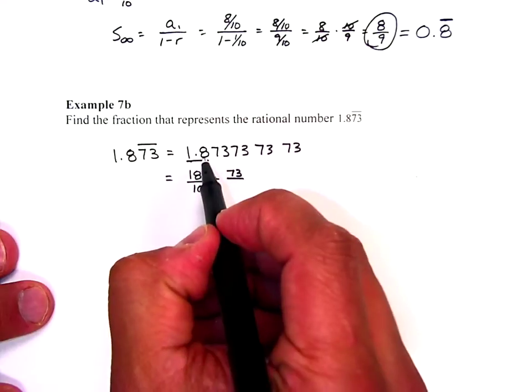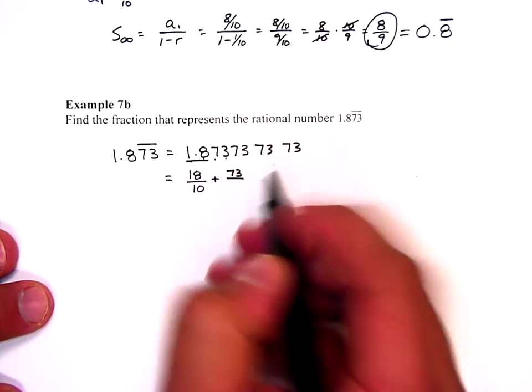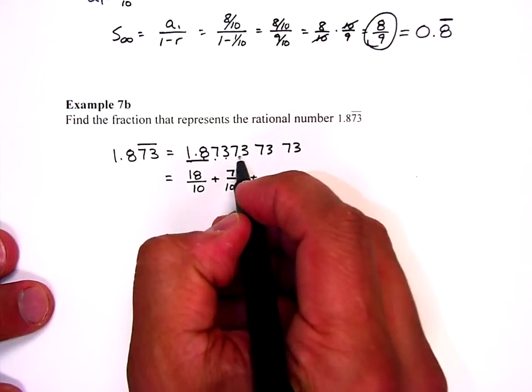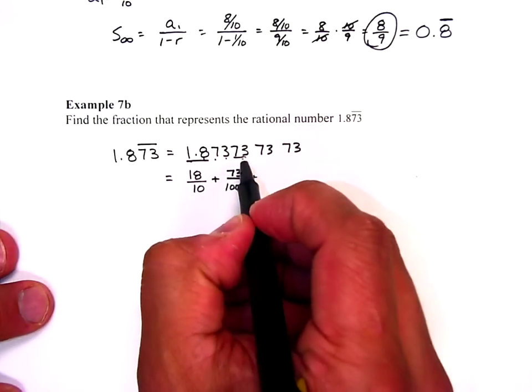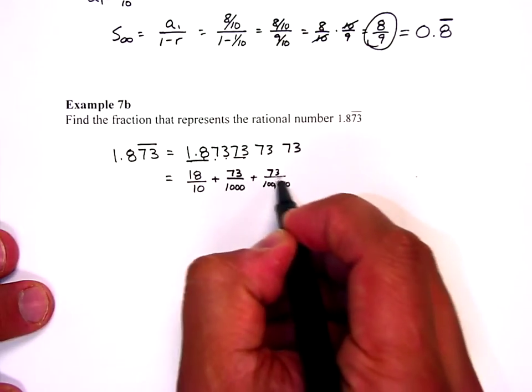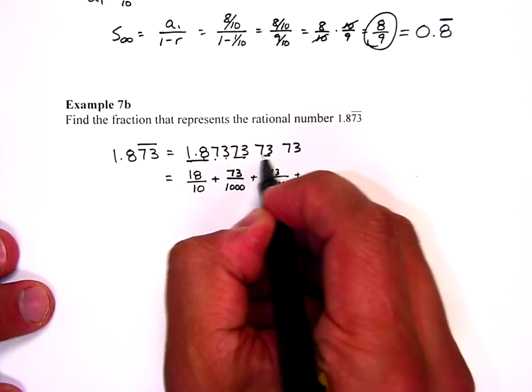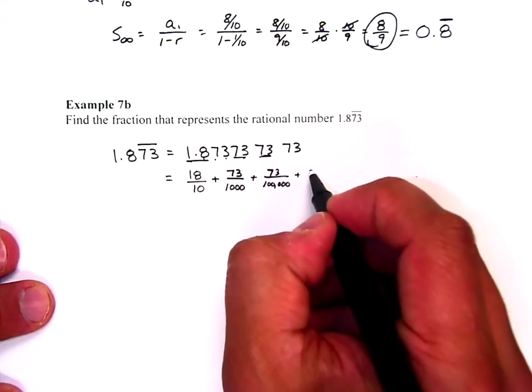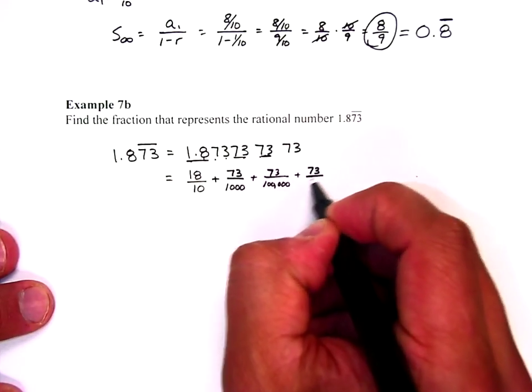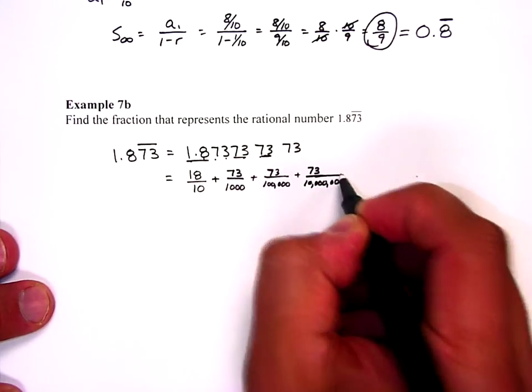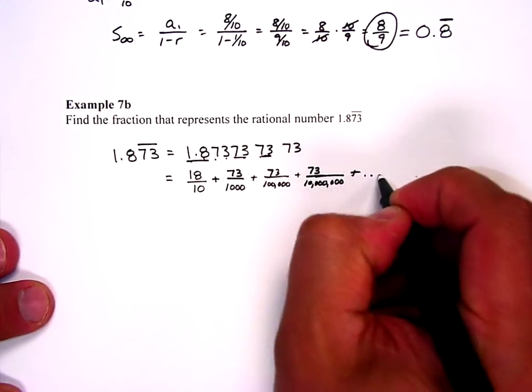But that 73 is not over tenths, hundredths, thousandths. And then I have another 73. But that's ten thousandths, hundred thousandths. And then I have another 0.73 but that's over millionths and ten millionths. So 73 over ten million. And it just keeps going on and on.